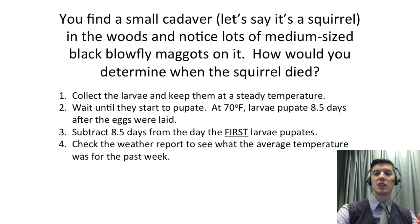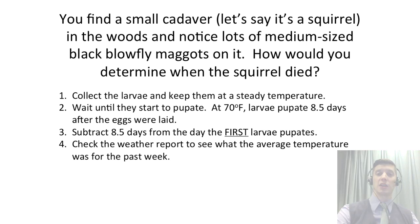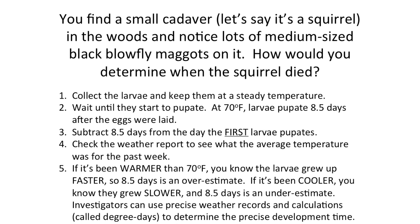The accumulated degree hours calculation tells you exactly how temperature has affected development time. If it's been warmer than 70 degrees, development went faster, so eight and a half days is an overestimate — the true time may be closer to seven or even six days. If it's been much cooler, the larva's development was slowed, making eight and a half days an underestimate — they may have actually been there nine or ten days ago. Using that calculation, we can come up with a fairly exact date of death. We can't get it down to the hours, but we can at least get it down to a specific day, which can make or break the difference in an investigation.